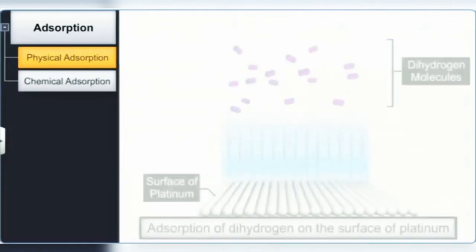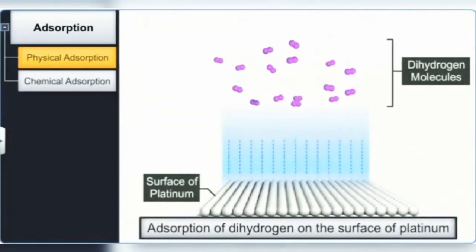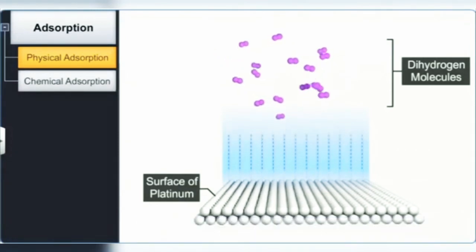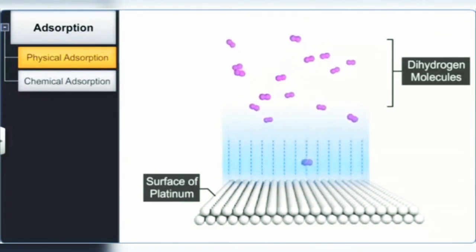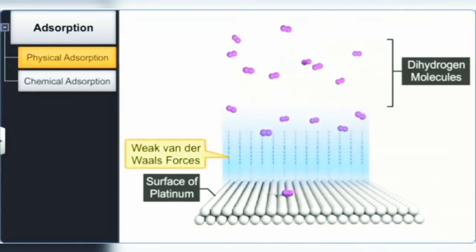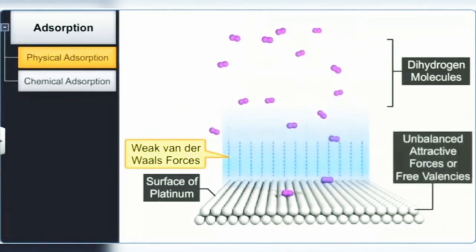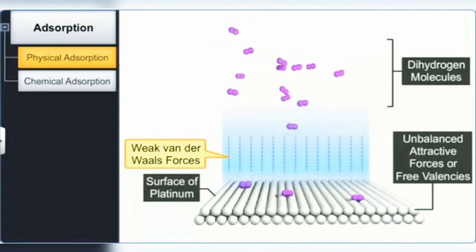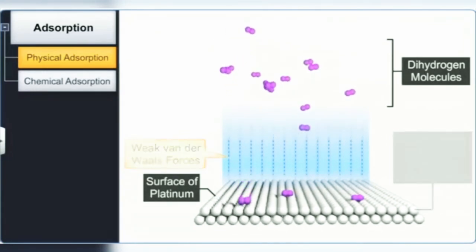Look at the example: in the adsorption of dihydrogen on the surface of finely divided platinum, hydrogen molecules are first attracted toward the surface of platinum by weak van der Waals forces and then adsorbed due to the presence of unbalanced attractive forces or free valences on the metal surface. This is physical adsorption.